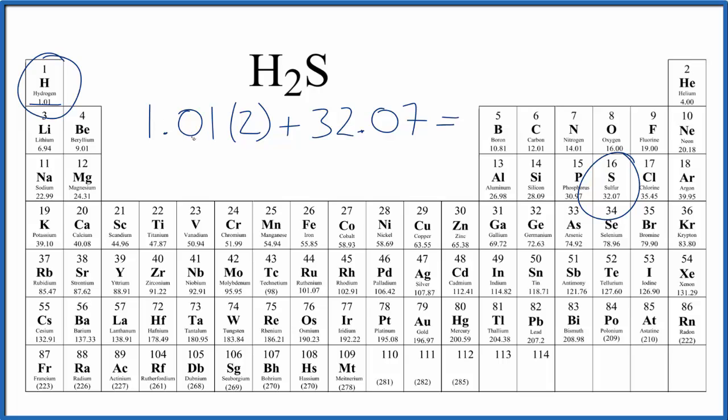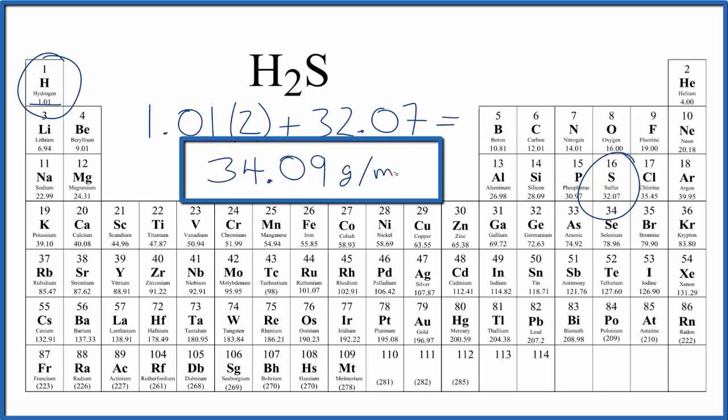So we multiply 1.01 times two. We add that to 32.07. We end up with 34.09, and the units are grams per mole.